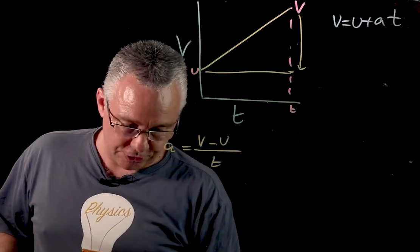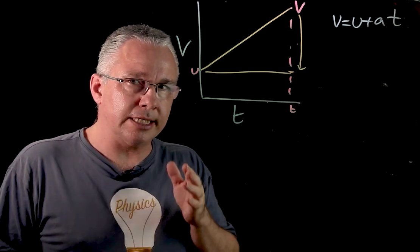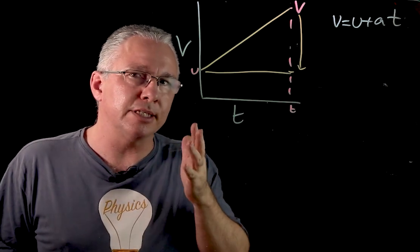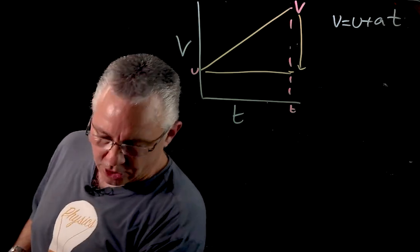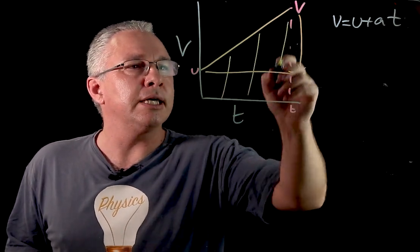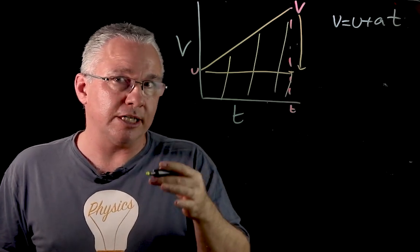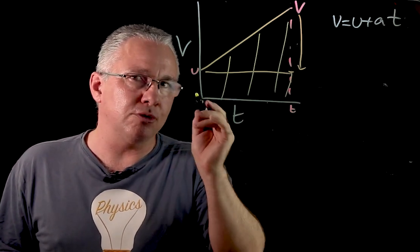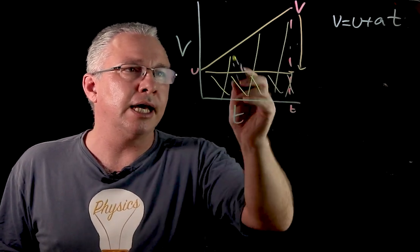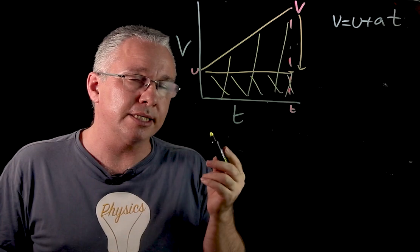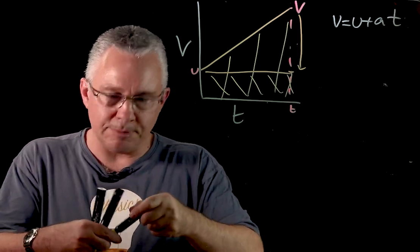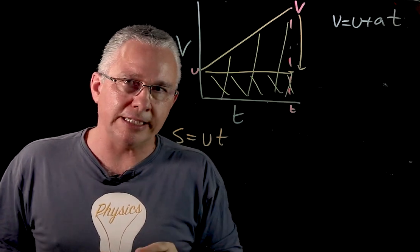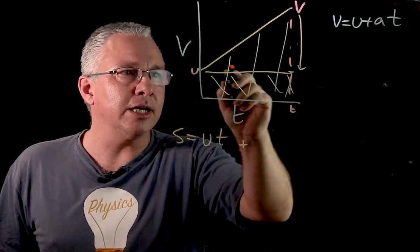How do we get our second equation of motion? So I'm going to stay with the same graph. But now the critical thing to understand is that not only can we work out acceleration in a velocity time graph, we can work out the displacement. And the displacement is simply the area underneath the curve. So this area here is the displacement, because displacement generally is velocity times time, and that's the y-axis multiplied by the x-axis. Now, if I now divide that area up into two components, you can see I have a lovely rectangle here, and a triangle up the top. And that's the key to help us to determine the second equation of motion.